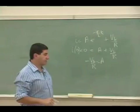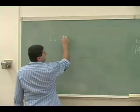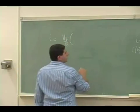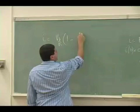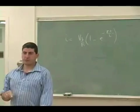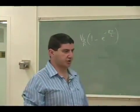So my final answer for the current is VB over R factors out, and I'm left with 1 minus E to the negative RT over L. So that's my final answer for what the current should look like, the actual equation of the current.